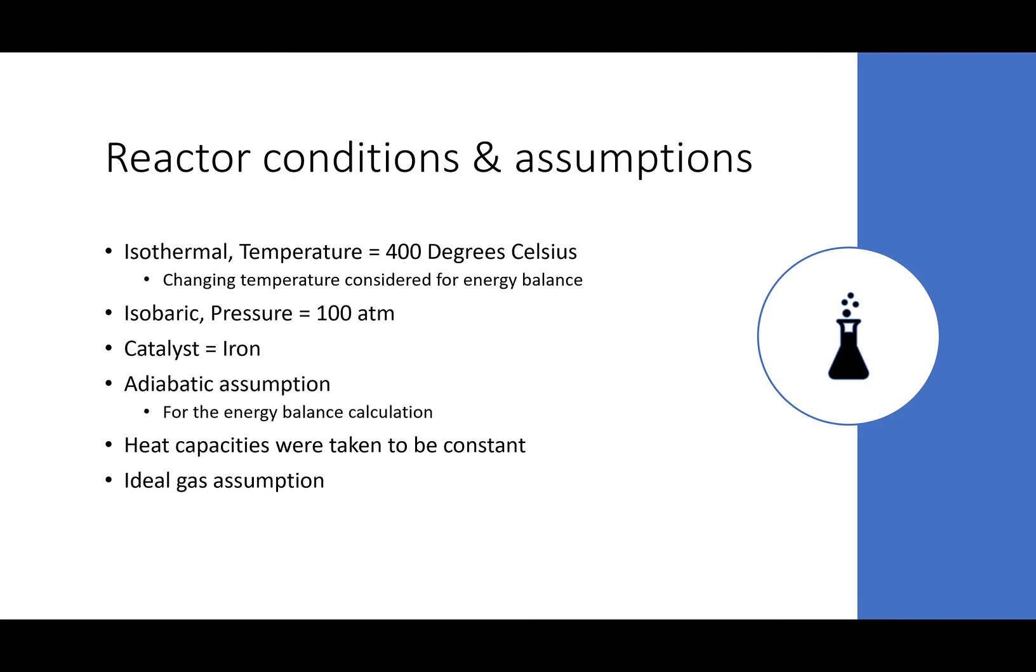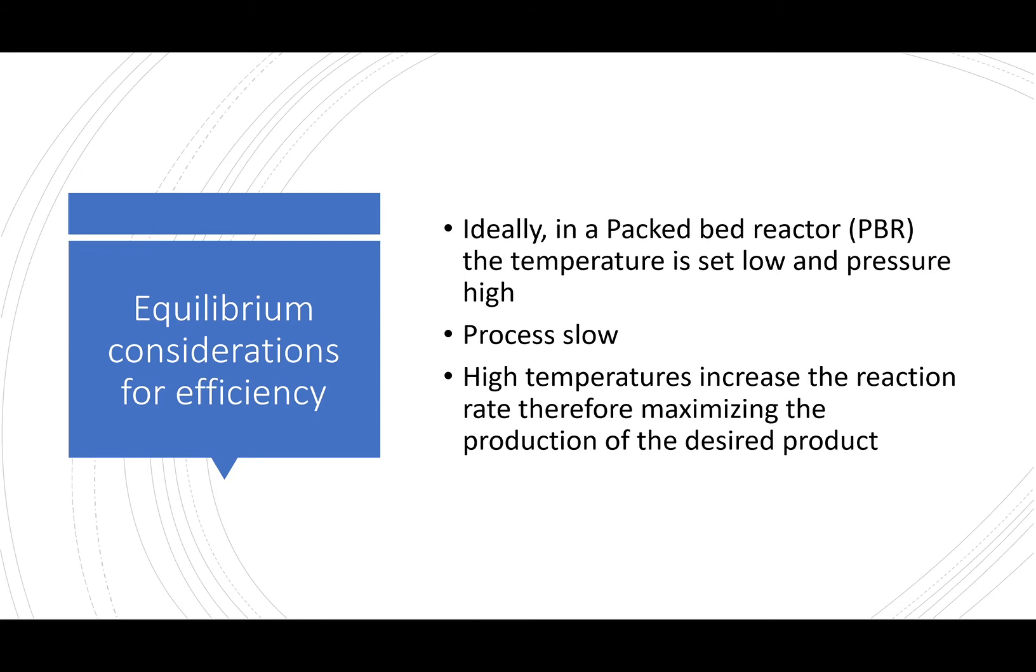Due to the complexity of this process, which is beyond the scope of the project, the reactor was conditioned to be ideal gas. Moreover, the Haber-Bosch process can utilize different catalysts, such as potassium hydroxide, in order to increase the speed of reaction rate without having to increase the temperature and pressure. Ideally, in a packed bed reactor, the temperature is set to low and the pressure is high, which creates a shift of equilibrium towards the product. But since the product is going to be slow, we want to maximize the production of the desired product, so we would increase the temperatures, which means that it would increase the reaction rate.